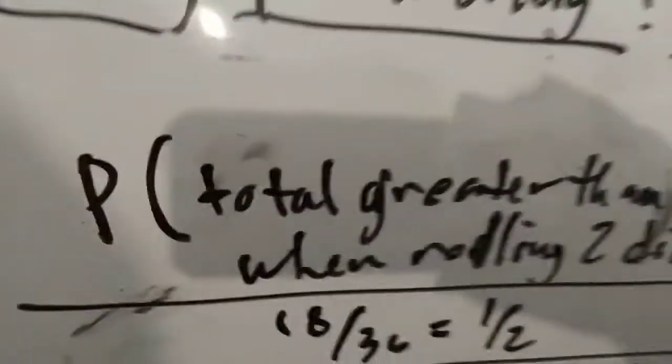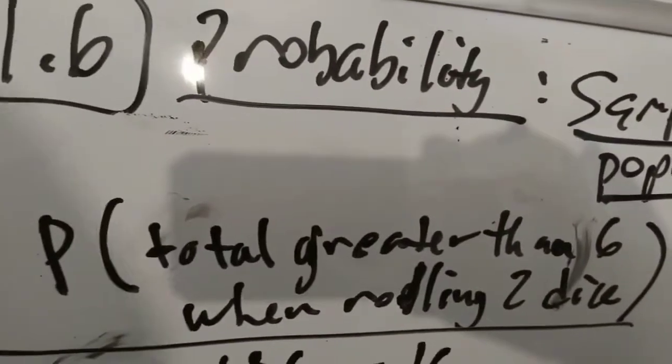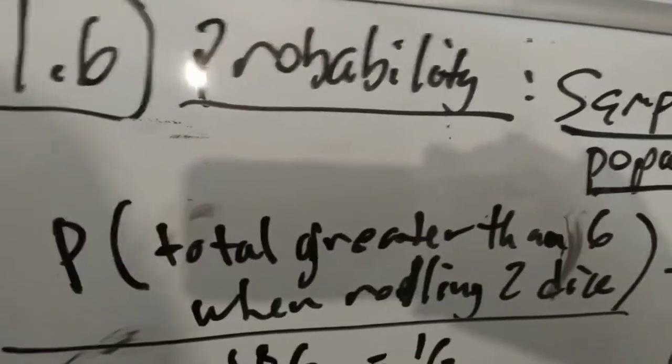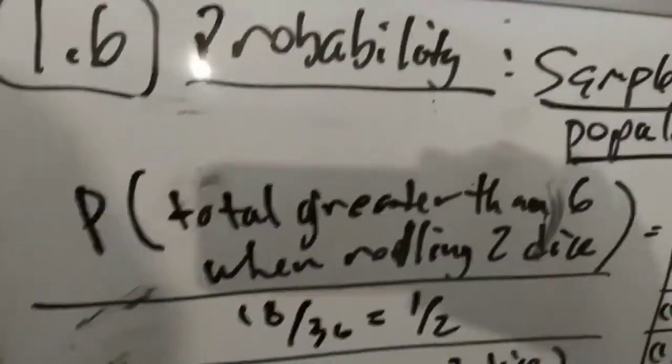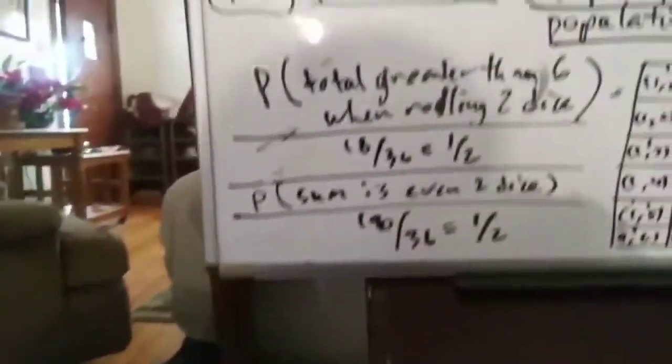So suppose one of your questions was, what's the probability of total greater than 6 when rolling two dice? So you roll two dice, right? You roll the two dice and these are your outcomes. The reason why this is the outcome is this.